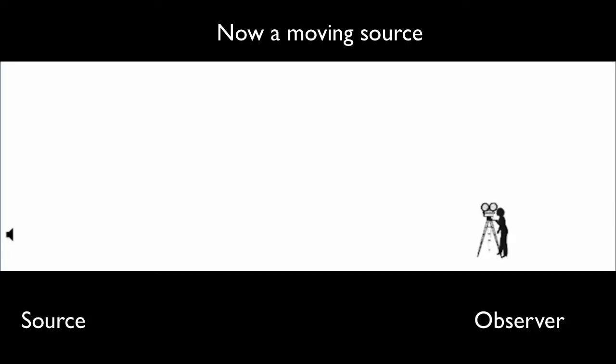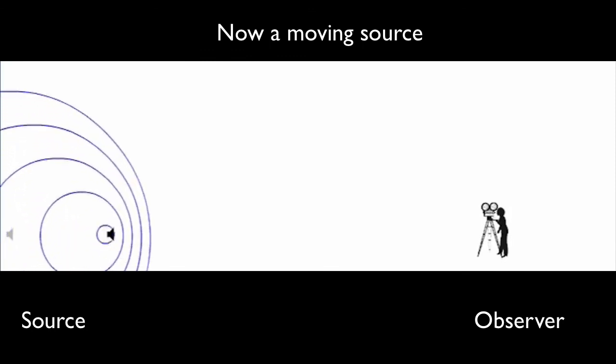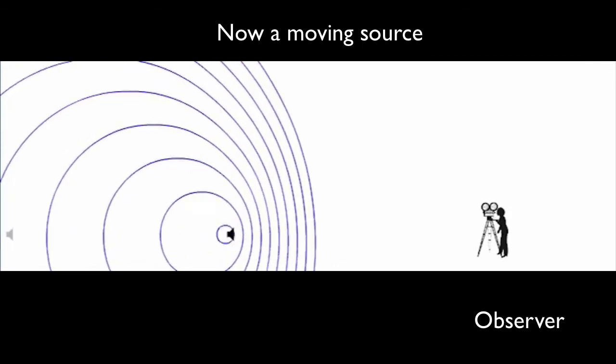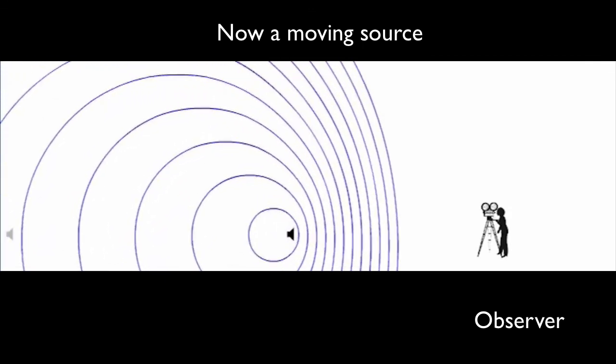Now we're going to consider what happens as a source moves towards an observer. So now we've got a stationary observer and a moving source. I want you to think: as the source approaches the observer, how does the observer observe the frequency, the wavelength, and the velocity of the sound coming from the source?